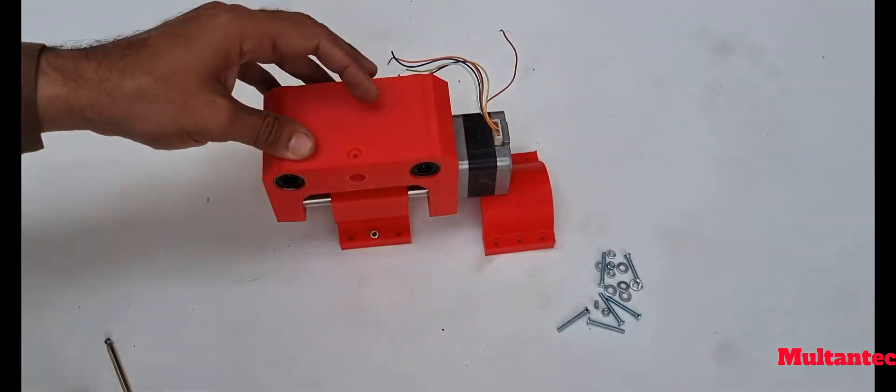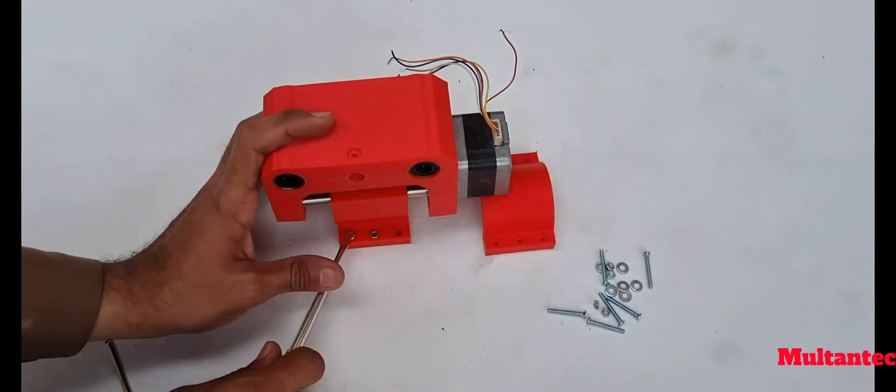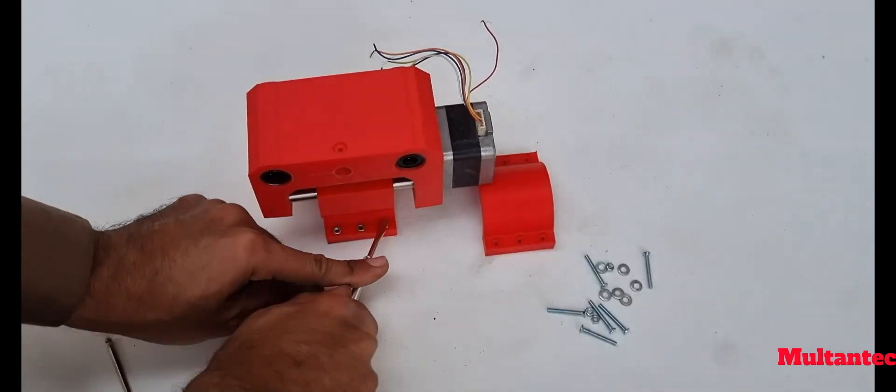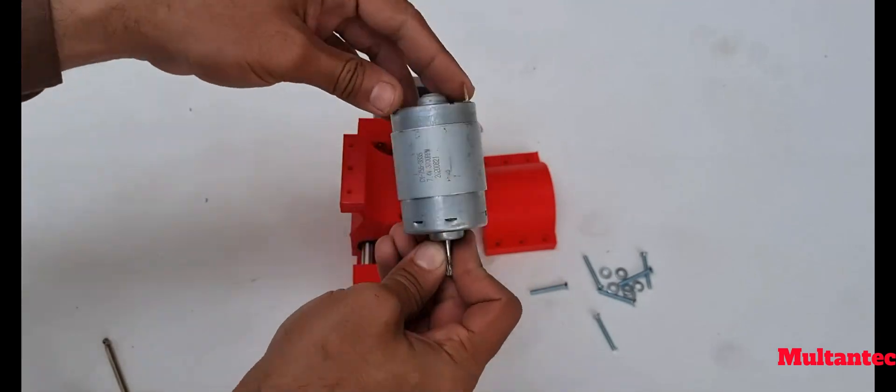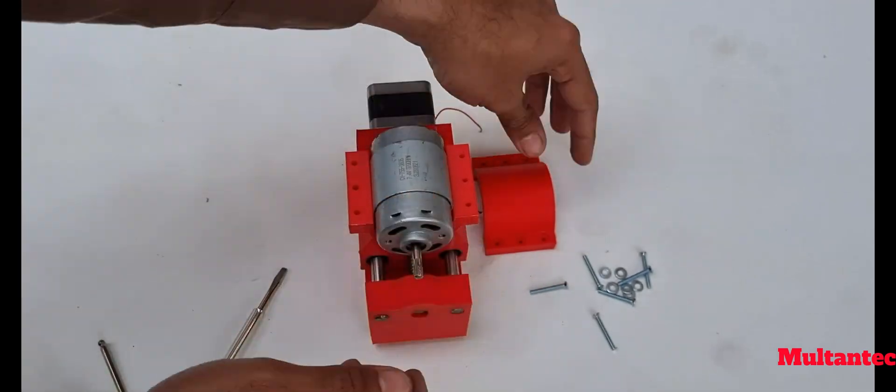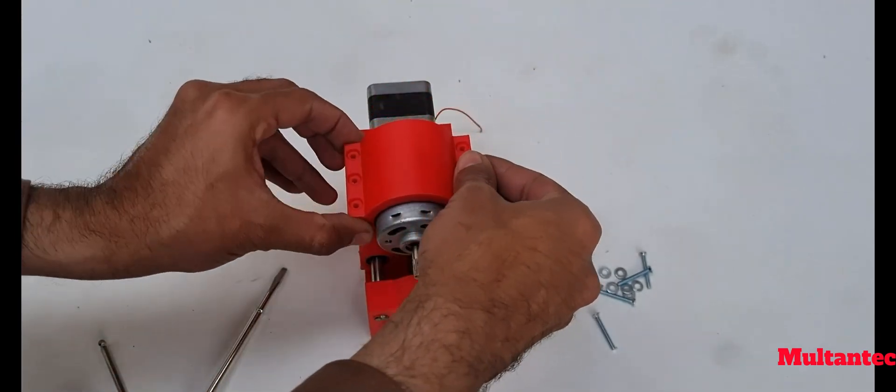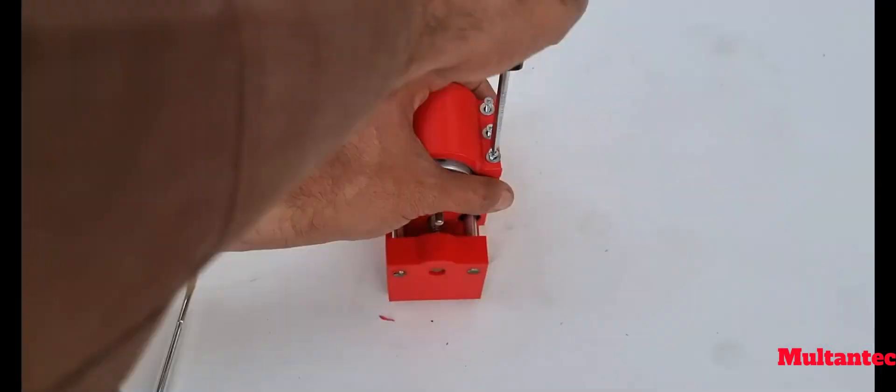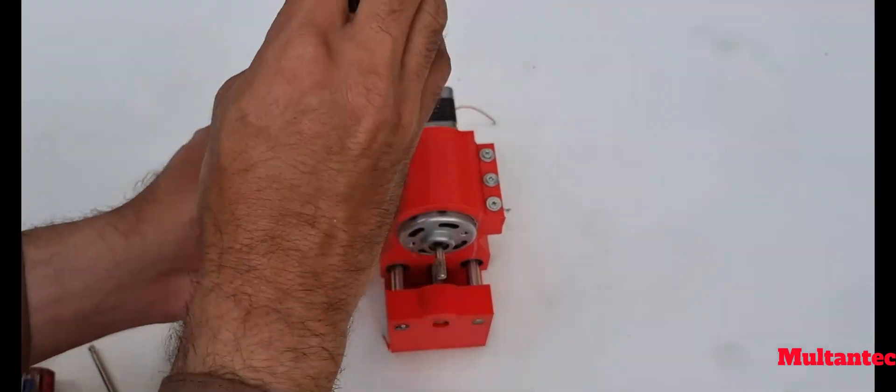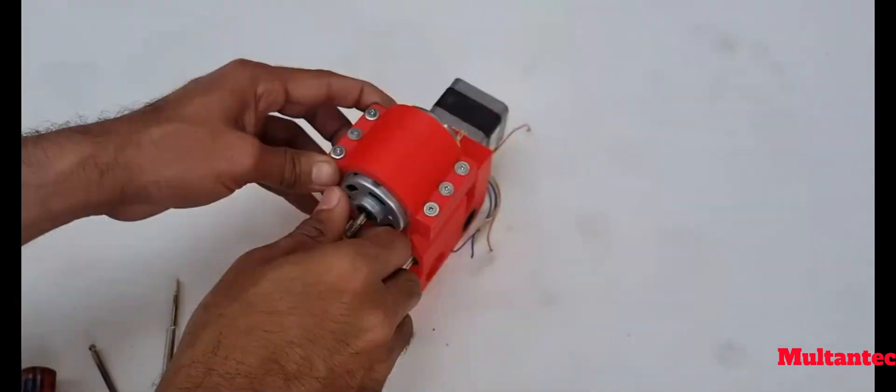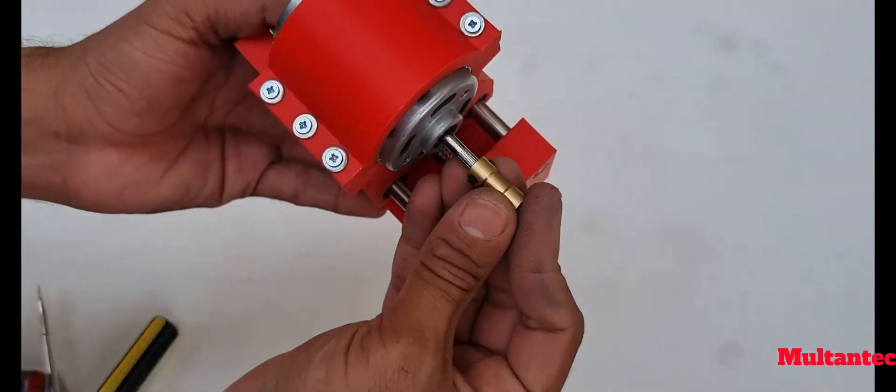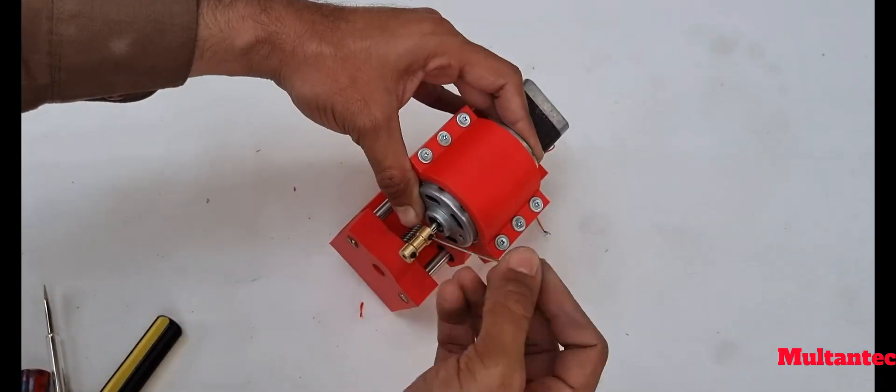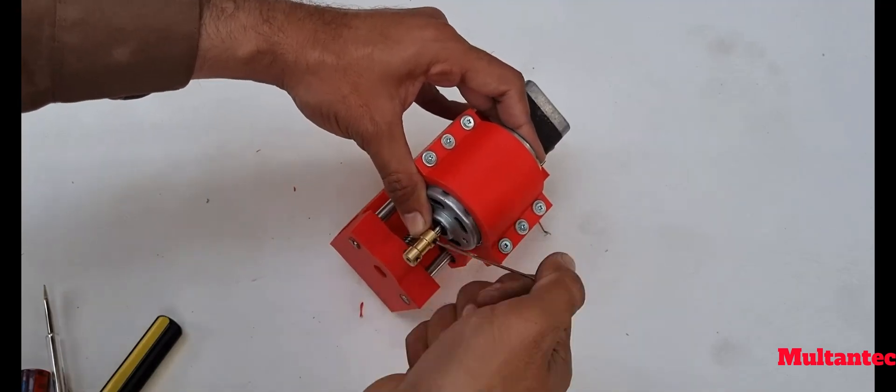Insert the M3 nuts in Z-axis spindle holder and gently press in place. Now place the spindle motor in holder and tighten it with M3 20mm screws along with 5mm washers. Now press the 5mm x 3mm brass coupler on motor shaft. Z-axis is ready now.